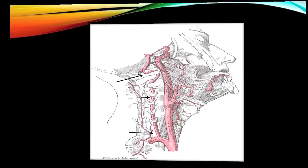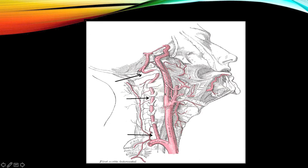A quick recap of brain blood circulation: the aorta divides into the common carotid and subclavian arteries. The common carotid divides into external and internal carotid; the internal carotid supplies the anterior aspect of the brain, forming the anterior circulation. The subclavian gives rise to the vertebral artery, which passes through the vertebrae and becomes the basilar artery, supplying the posterior part of the brain — this is the posterior circulation.